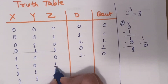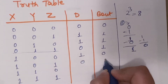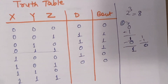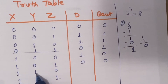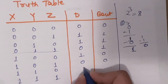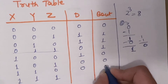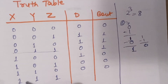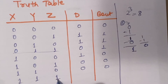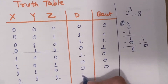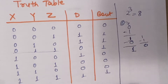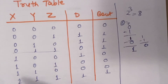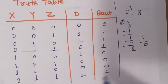For 1 minus 0 minus 0: difference is 1, no borrow. For 1 minus 0 minus 1: 1 minus 1 is 0, difference is 0, no borrow. For 1 minus 1 minus 0: difference is 0, no borrow. For 1 minus 1 minus 1: 0 minus 1 gives difference 1 and borrow 1. The truth table is now complete.